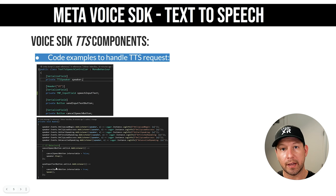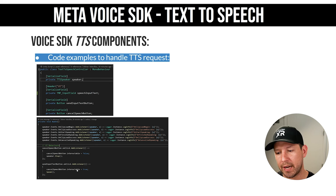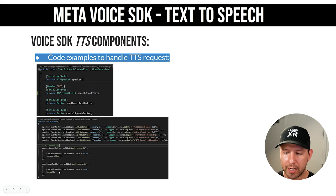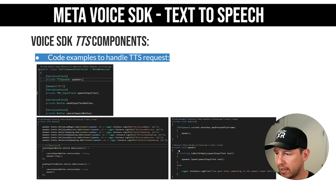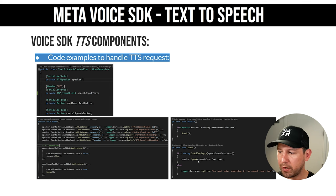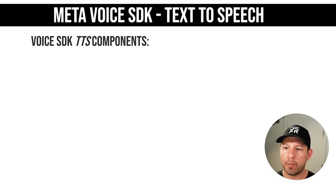The cancel button is straightforward: I set the cancel speech button to non-interactable so it can't be pressed multiple times, then call speaker.Stop() which immediately cancels and stops the audio source, and handles disposing any memory. The send input text button enables canceling since we can then cancel the request, and calls Speak() on the speaker. The Speak method communicates with Wit and checks that there is data on the speech input text before calling speaker.Speak() with the populated data.